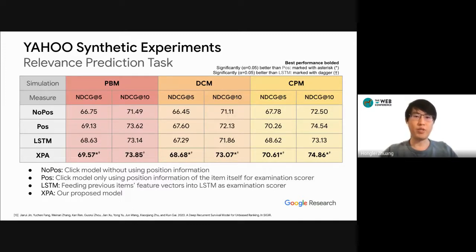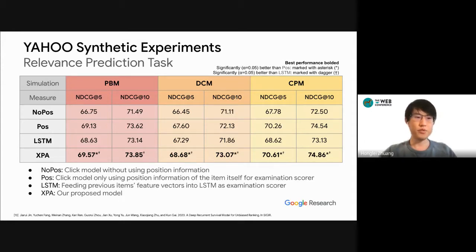We also conducted a relevance prediction task, using the relevance score output of each model to rank items, and measured performance based on human-judged relevance labels using ranking metrics like NDCG@5 and NDCG@10. Our proposed model outperforms all other baselines across multiple click simulators, showing that our proposed model is robust and effective.